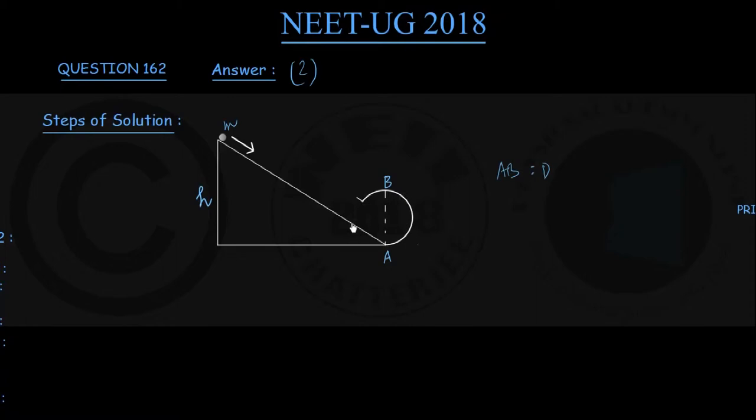So first of all, we shall find the speed acquired by this body at point A. How do you find that? One method is applying kinematic equation V² = U² + 2AS. Other method is the energy method, and let us apply this in my first step. Step number 1: principle of conservation of mechanical energy.